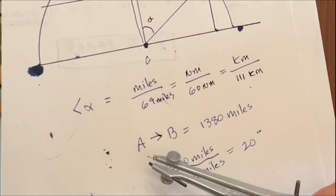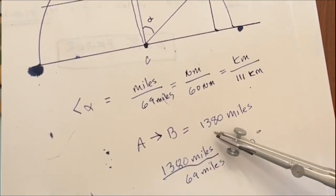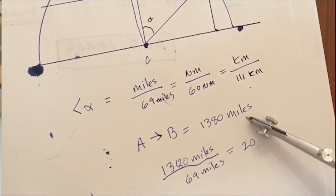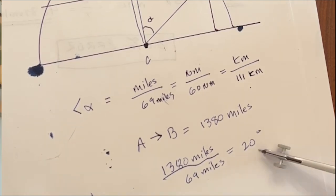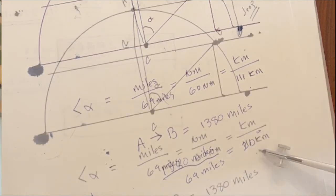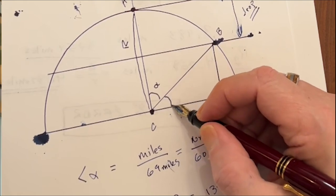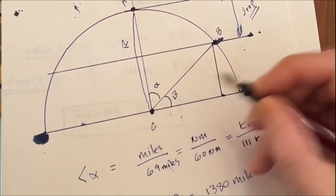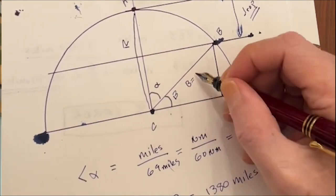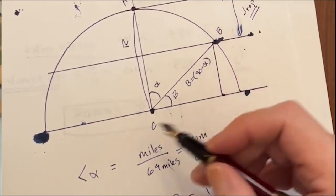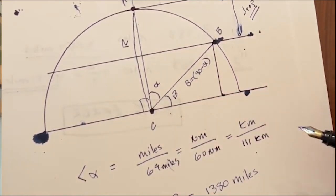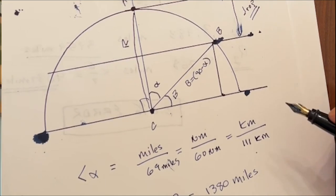We'll say the distance between A and B is 1380 statute miles. We would take 1380 miles divided by 69 miles, and that would give us 20 degrees. Now let's go back up to a diagram. What about this angle right here? We'll call this angle beta. Angle beta equals 90 minus angle alpha, because this is a right angle. So now we know what we're dealing with a little bit.